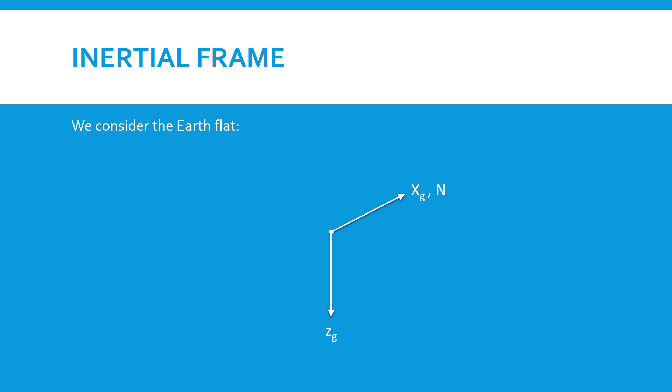The Z coordinate of this earth-fixed frame points downward, actually towards the center of the earth. Now to have a right-handed coordinate system, we have to have the Y direction set appropriately.